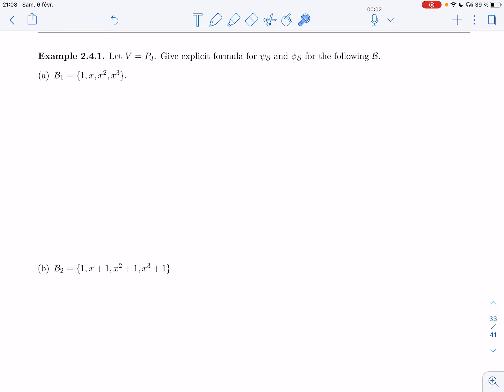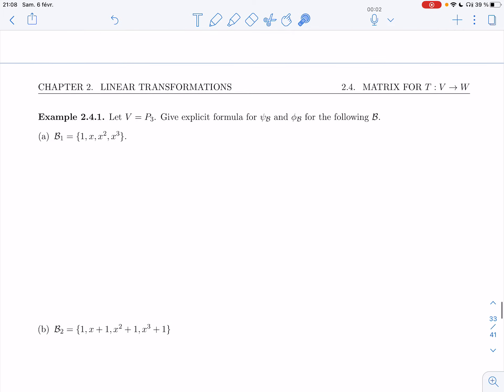All right, so let's play with these coordinate maps and these linear combination maps. Example 2.4.1. Let's take V equal P3, polynomials of degree 3 or less.